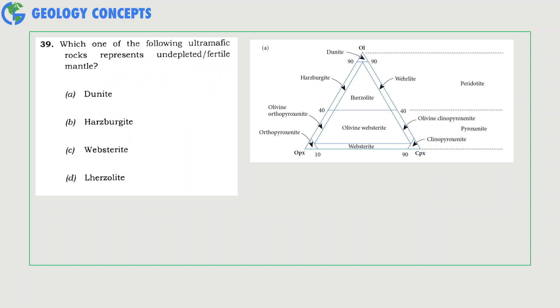Coming to the next question: which one of the following ultramafic rocks represents undepleted or fertile mantle? First of all, undepleted or fertile mantle means the composition which upon partial melting can give rise to a basaltic melt.